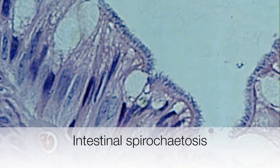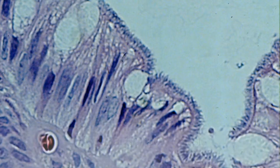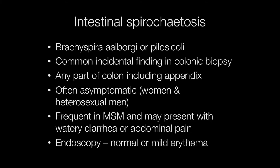This is a nice example of intestinal spirochetosis. Intestinal spirochetosis is a common incidental finding in colonic biopsies. It can affect any part of the colon, including the appendix. It is often, in fact, usually asymptomatic, particularly in women and heterosexual men. But it is a frequent finding in men who have sex with men and may present with watery diarrhoea or possibly abdominal pain.